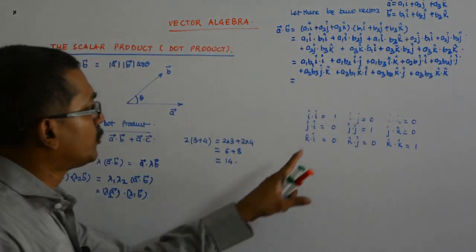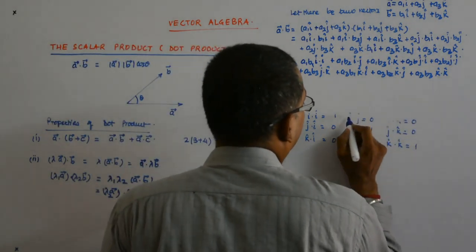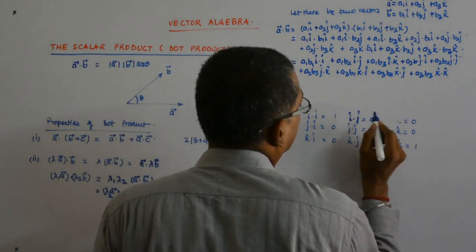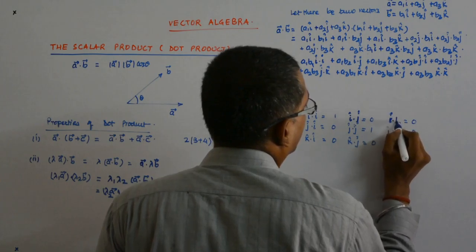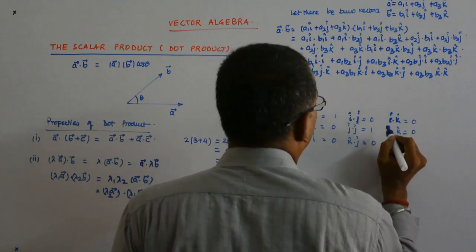Now, that gives us a1 b1 i cap dot i cap plus a1 b2 i cap dot j cap plus a1 b3 i cap dot k cap plus a2 b1 j cap dot i cap plus a2 b2 j cap dot j cap plus a2 b3 j cap dot k cap plus a3 b1 k cap dot i cap plus a3 b2 k cap dot j cap plus a3 b3 k cap dot k cap. Now, you see, I'll use this.